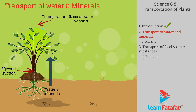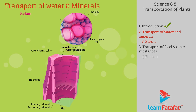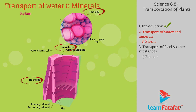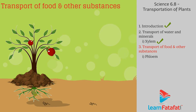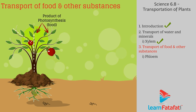With transpiration, water and minerals are transported to higher body parts. It creates a continuous upward suction allowing water to be transported to upper body parts. It also helps in temperature regulation — that is, excess heat is eliminated via water vapors. Xylem connects and transports water and minerals from roots to all body parts, interconnecting vessels and tracheids of roots, stems, and leaves.